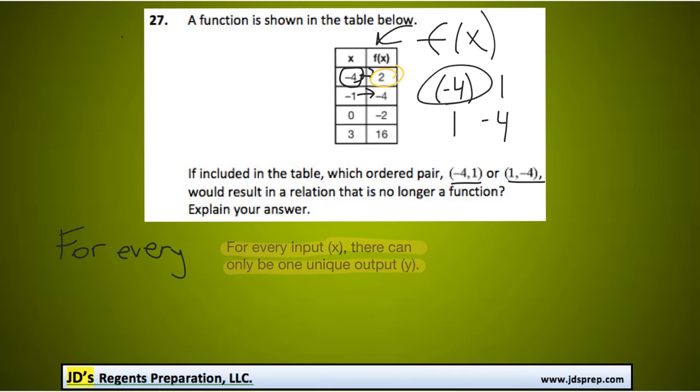If we gave an input of negative 4 again with a different output of 1, then we no longer will have a function because it's giving a different output, that's 2 different outputs.